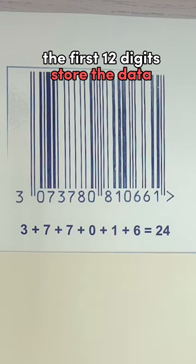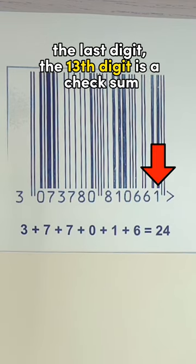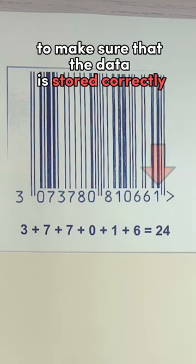The first 12 digits store the data, and the last digit, which is the 13th digit, is a checksum to make sure that the data is stored correctly.